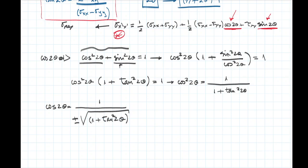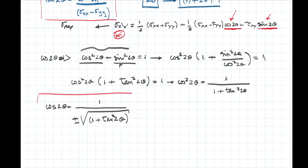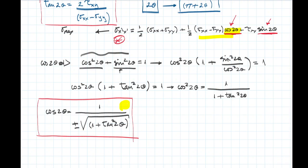That value could be positive or negative. This is one of the values I was searching for — I now know cosine of 2 theta in a way that I can substitute it into the stress equation. By having the value of tangent of 2 theta, I can get rid of any explicit relation with the angle theta.